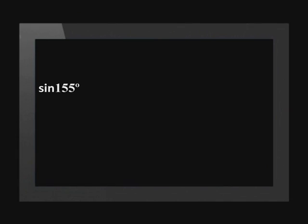Let's start with the first one. Sine(155°) can be reduced to an acute angle. This lies in the second quadrant, so sine will be positive. We start by writing it as sine(180° − 25°), which reduces to sine(25°). This is therefore equal to b.